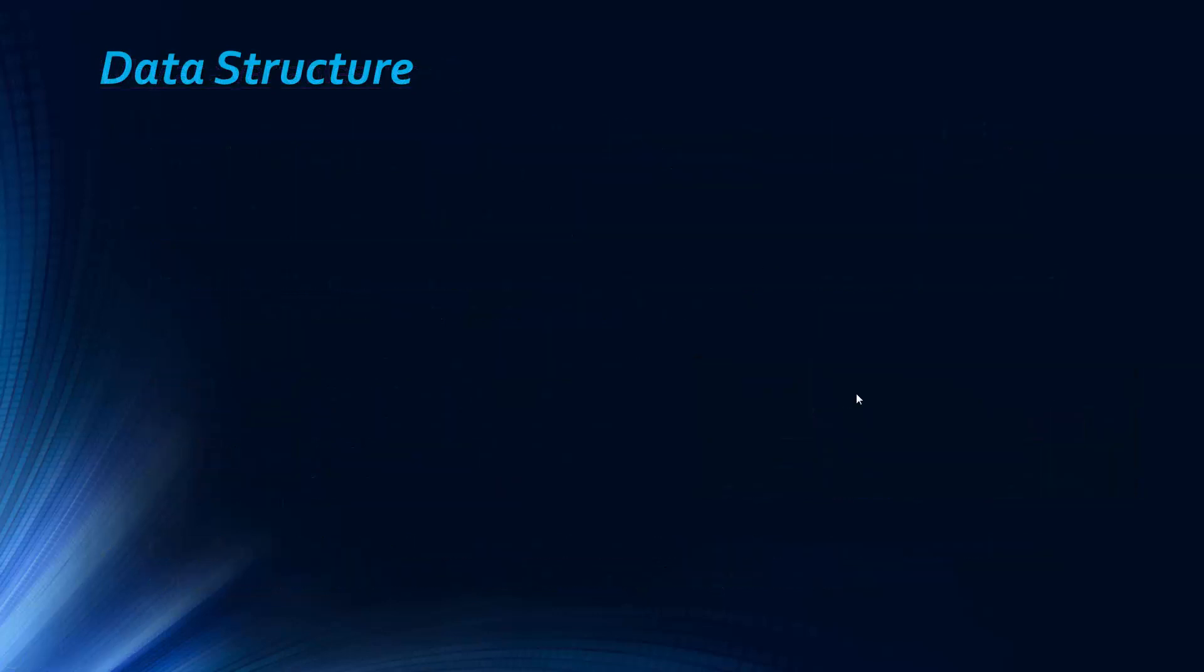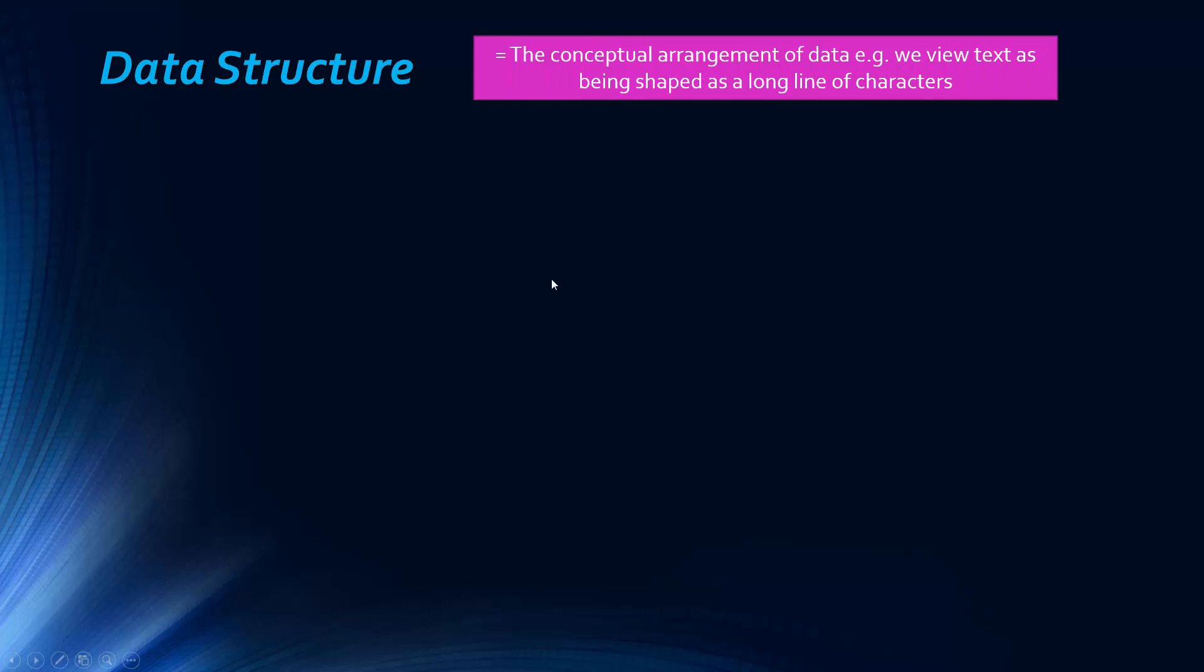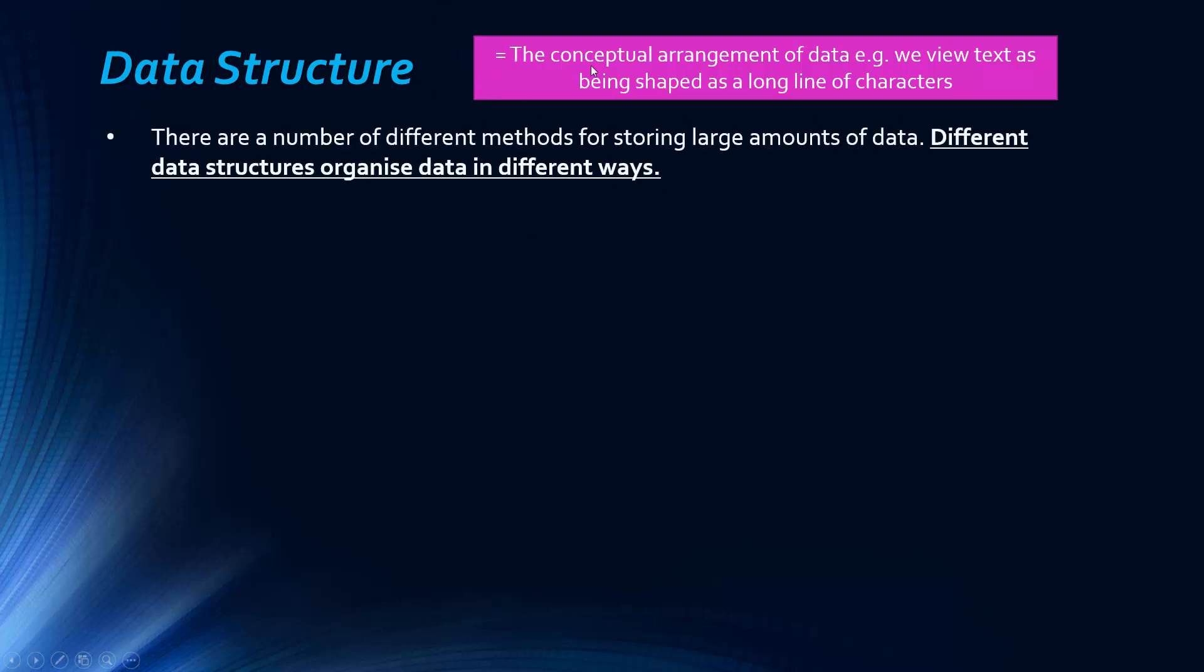We've touched on data structures before briefly, but we're going to expand on it now. The textbook definition of data structure is it's the conceptual arrangement of data. We view text as being a long line of characters. For our purposes, it's best if we don't focus on this definition too much. There's two main ways you can look at data structures - in terms of their abstract properties, or in terms of their implementation. I think that's much more what we're going to be focusing on.